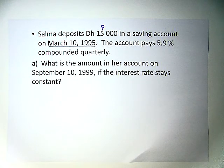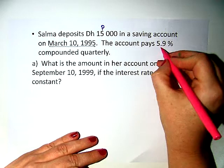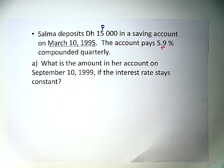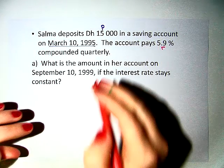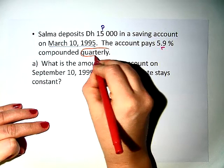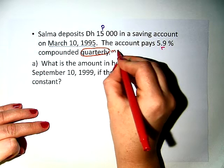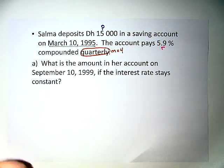The account pays 5.9%, so that is our rate, and it is compounded quarterly. Because of the word 'compounded quarterly,' that means that our M is 4.